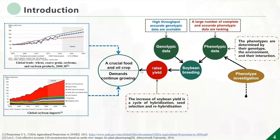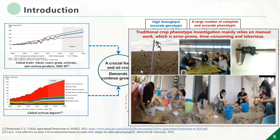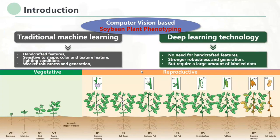The high-throughput phenotype data is difficult to obtain. The traditional crop phenotype investigation mainly relies on manual work, which is time-consuming and labor-intensive, and is not suitable for high-throughput investigation. Computer-based methods were introduced to soybean plant phenotyping. The traditional machine learning method requires designing handcrafted features for different research objects, and it is sensitive to shape, color, texture features, and lighting conditions. It has weak robustness and generalization.